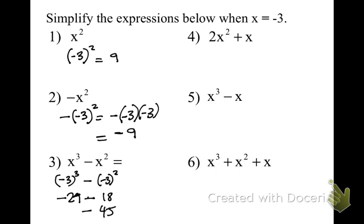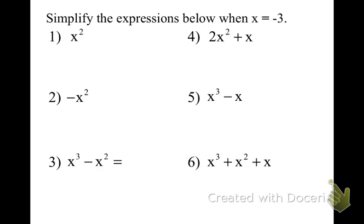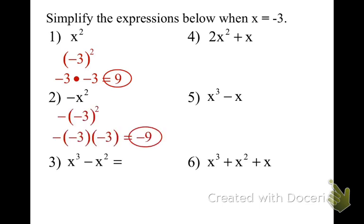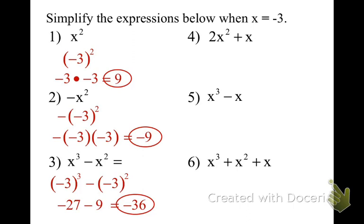The next one will be 2 times negative 3 squared plus negative 3. Using order of operations, we square negative 3 to get positive 9, then 2 times 9 is 18, minus 3 is 15.